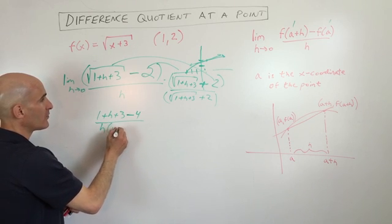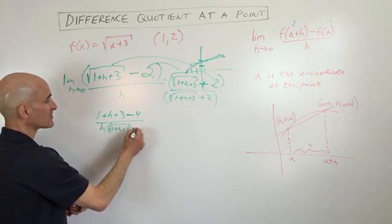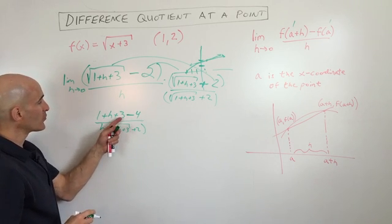And this is all divided by h times this quantity right here. So this is square root of one plus h plus three plus two. Now if I simplify this down a little bit further, what do we get?